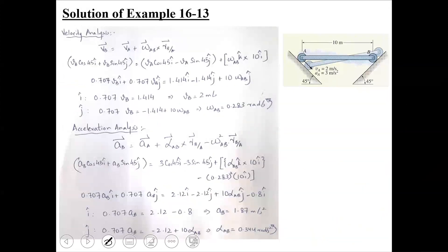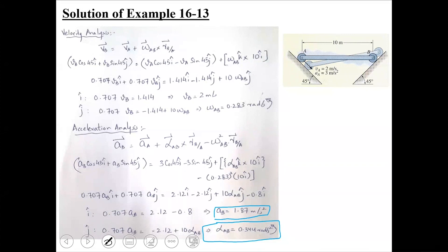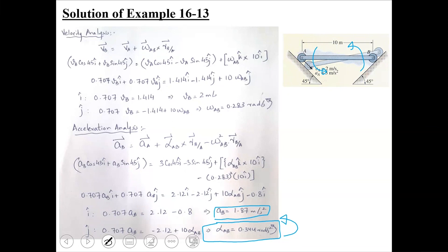Solving the two equations, AB comes out to be 1.87 m/s² and alpha comes out to be 0.344 rad/s², positive. This means alpha acts counterclockwise, same direction as omega. So the body is angularly accelerating at this instant. Example 16-13 is complete.